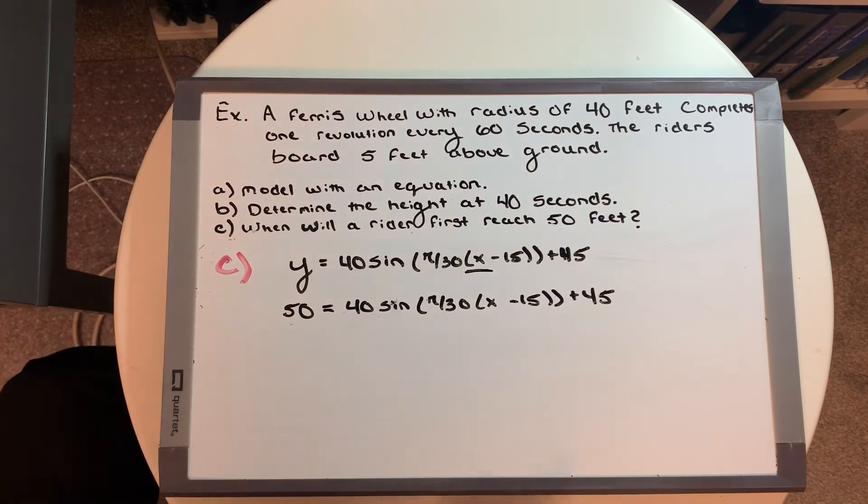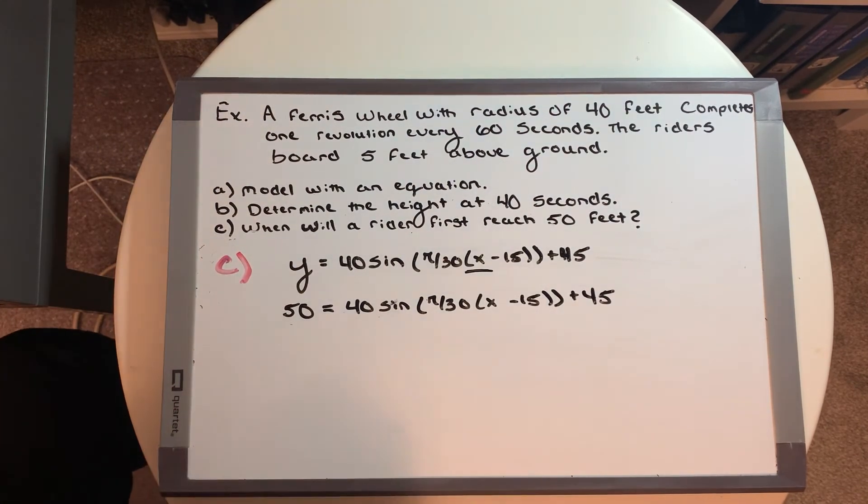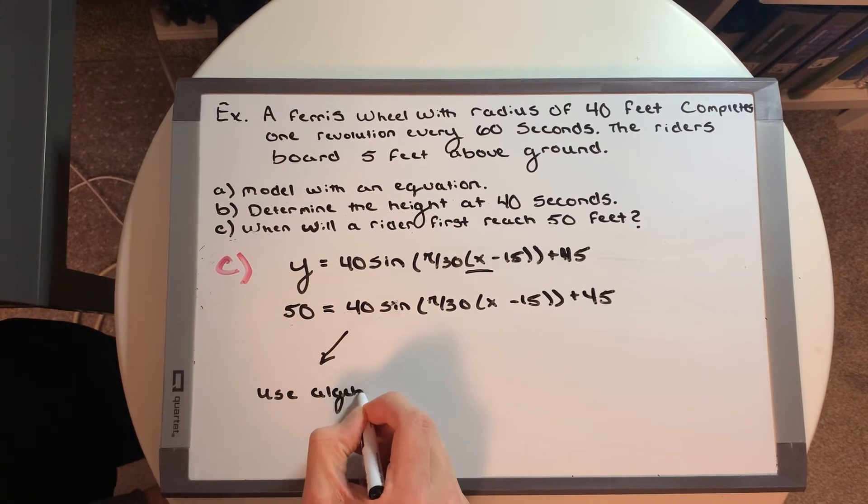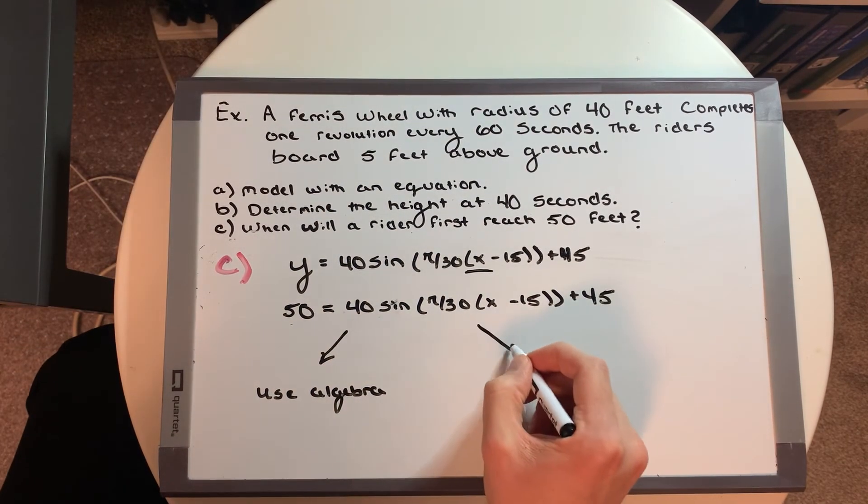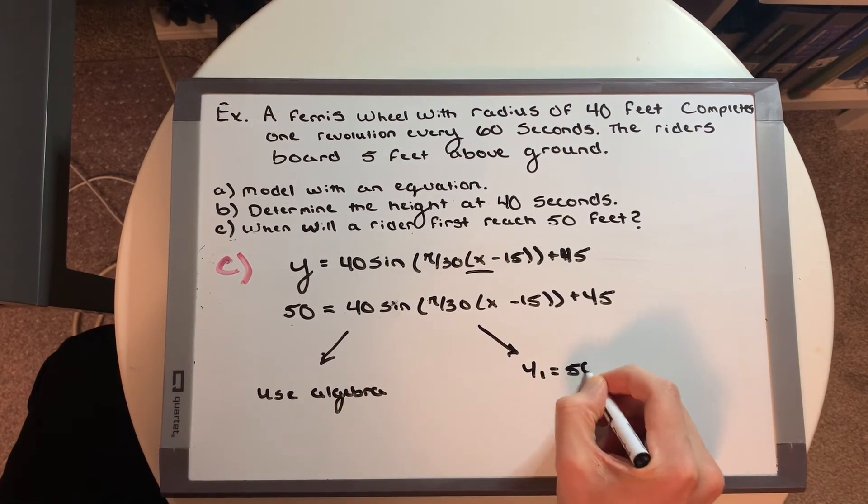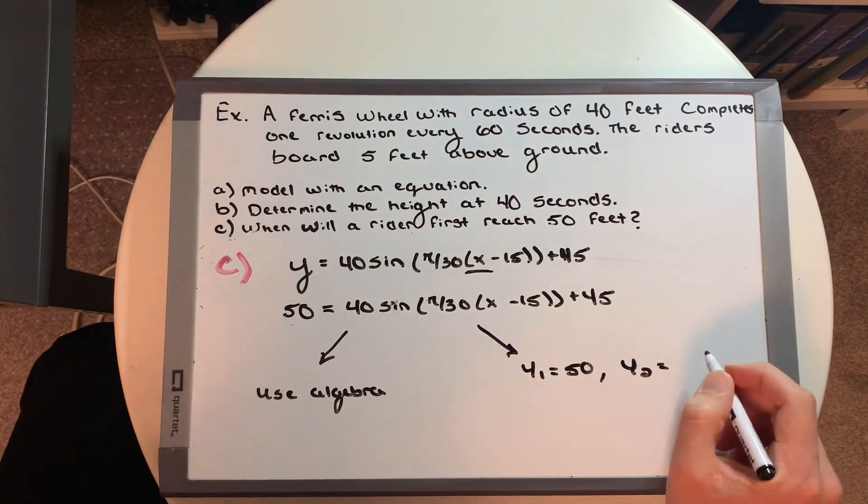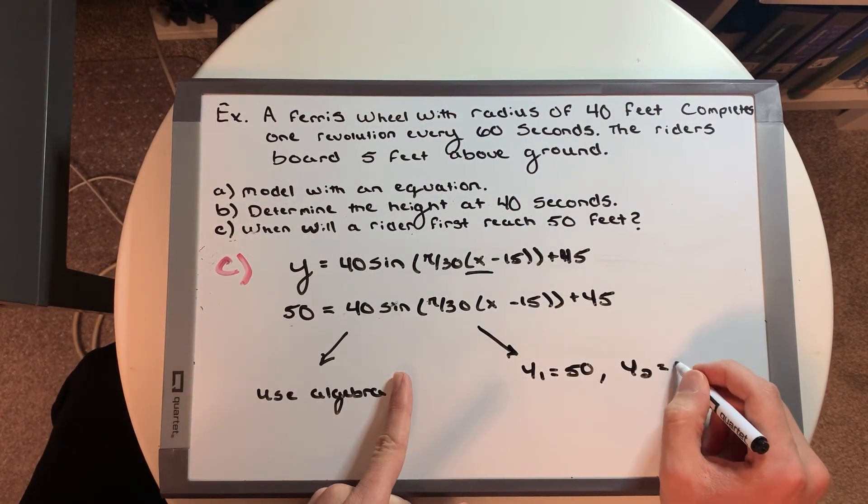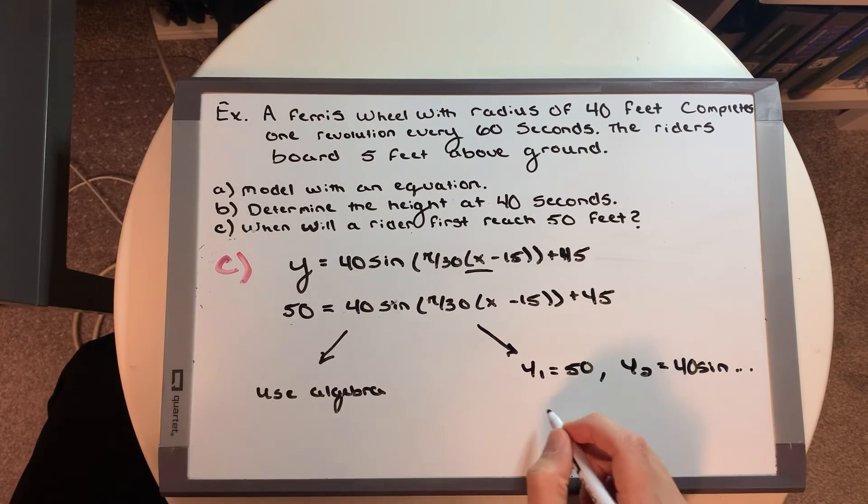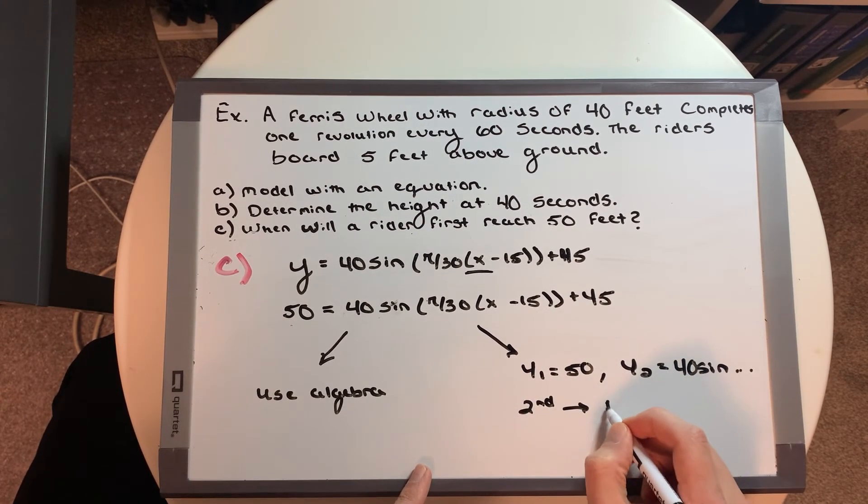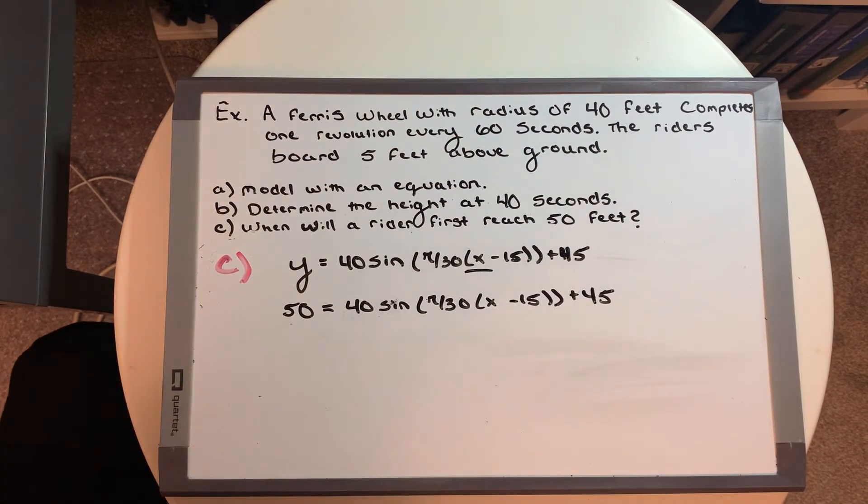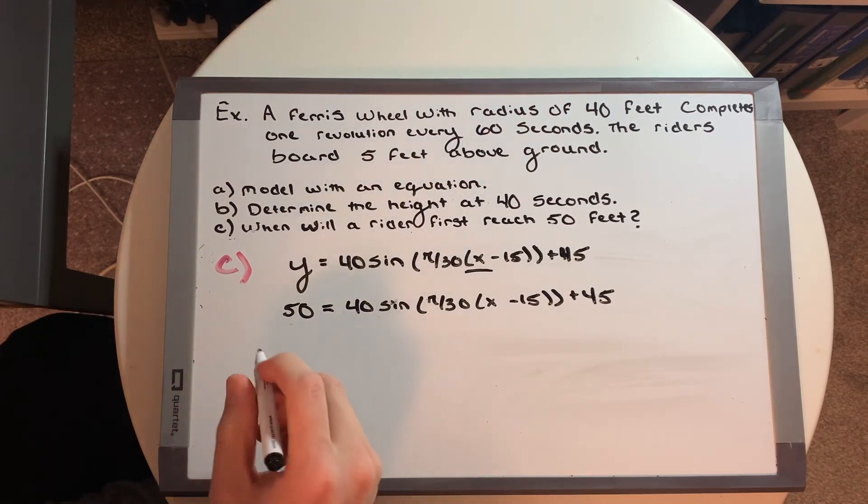And now what we do is we're going to say, well, we can technically simplify this algebraically. So that's one option, use algebra. And the second one would be type the first part into y1. So y1 is equal to 50. And y2 is equal to your other component. So that second half, the 40 sine component. And then you're going to say, second, trace, and intersect. For the sake of the video, we're going to try and do this algebraically, and then solve for a solution here.